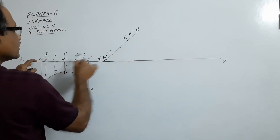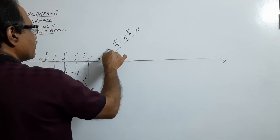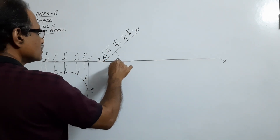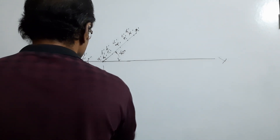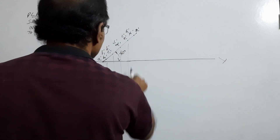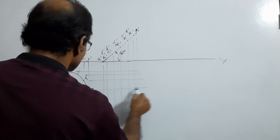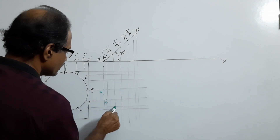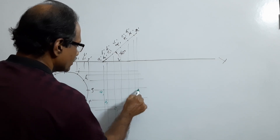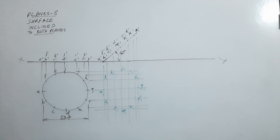From G1-dash backwards, get C1-dash; at the center, D1-dash. So you get A1-dash, B1-dash, C1-dash, D1-dash, E1-dash, F1-dash, G1-dash, H1-dash. Draw vertical projectors and horizontal projectors to get an ellipse. Identify all points: A1, B1, C1, D1, E1, F1, G1, H1, I1, J1, K1, L1. Connect them by a smooth curve.